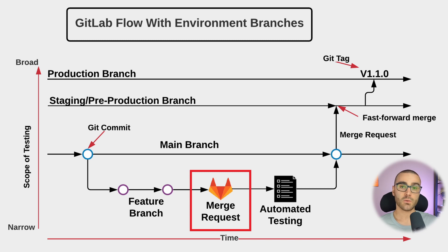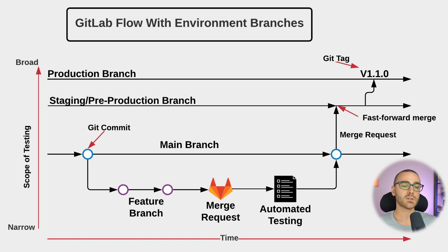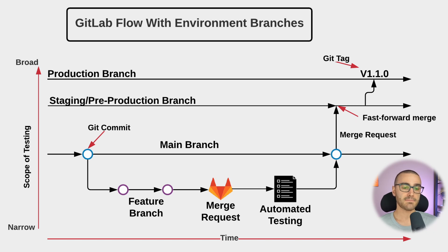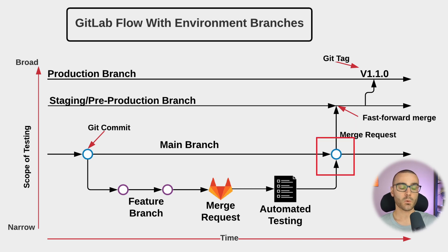A merge request, similar to a pull request in GitHub, is basically proposing that your changes on your feature branch be merged into a target branch. In this case, we're going to merge the feature branch into the main branch. Once you've opened up a merge request, that should trigger automated testing either inside of GitLab or through an external tool like Jenkins. Once automated testing has passed, we then merge that merge request into the main branch, promoting our changes from the feature branch.